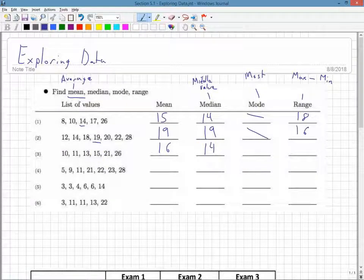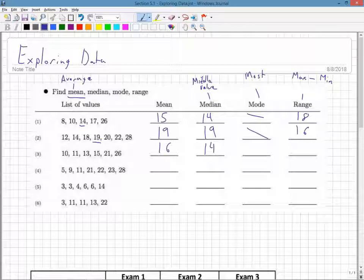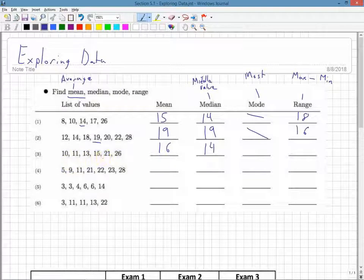Again, I look for the mode, a number that repeats itself. This one does not have a mode. The range: 26 minus 10 is 16.